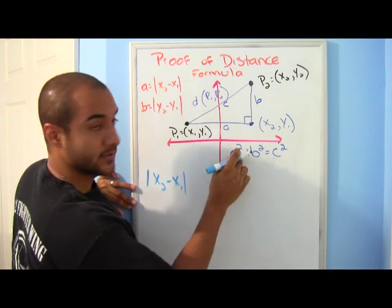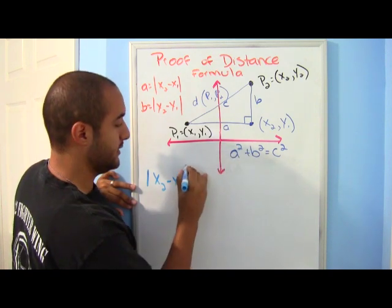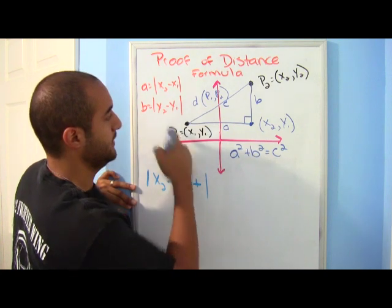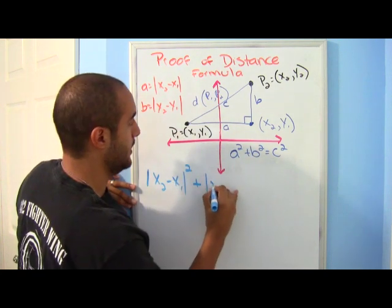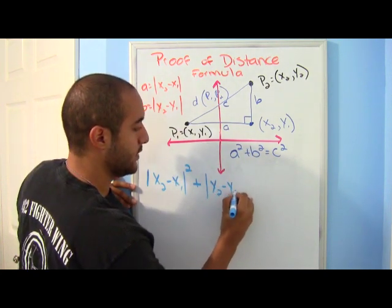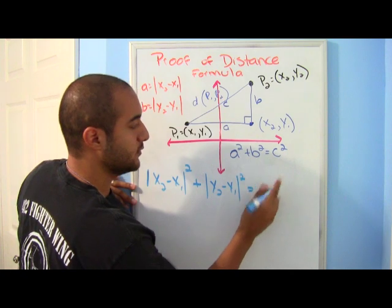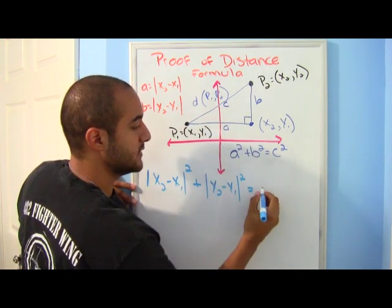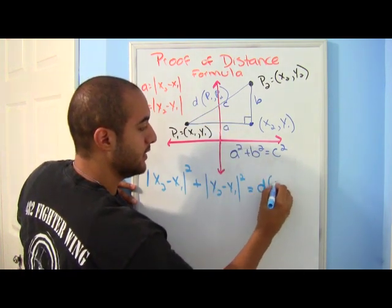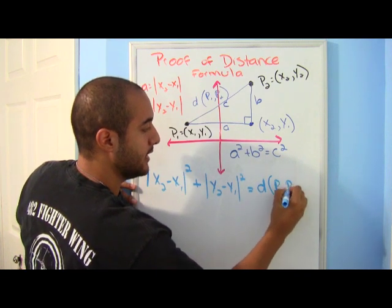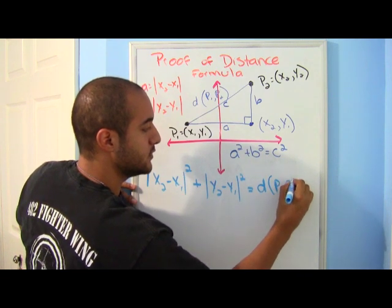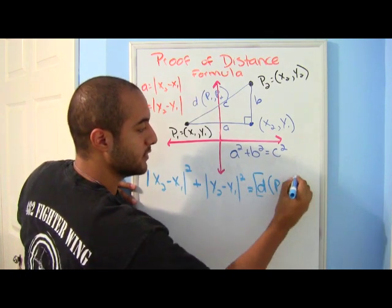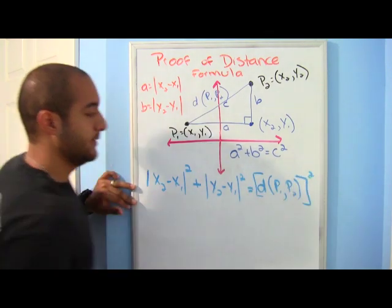So we have: the absolute value of x2 minus x1, squared, plus the absolute value of y2 minus y1, squared, equals c squared. Remember, c is the distance of p1 and p2, and that's supposed to be squared also.